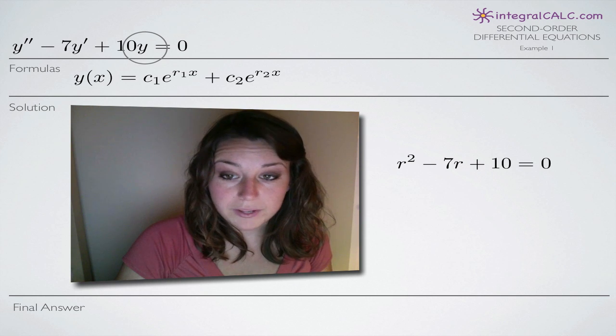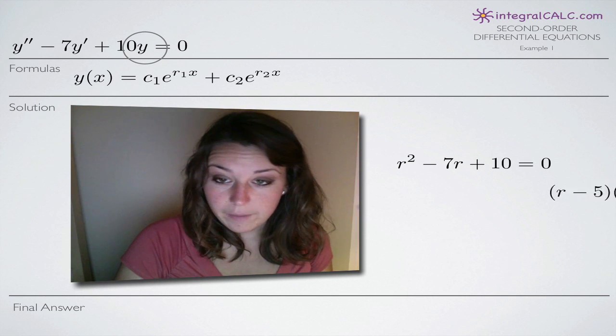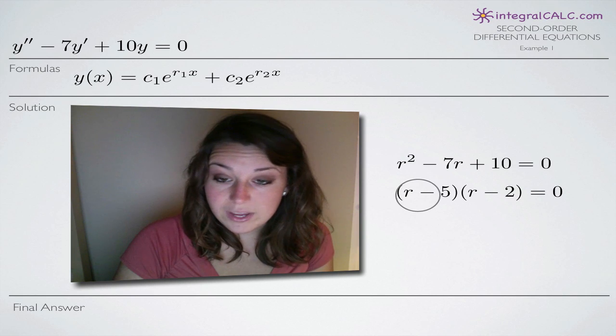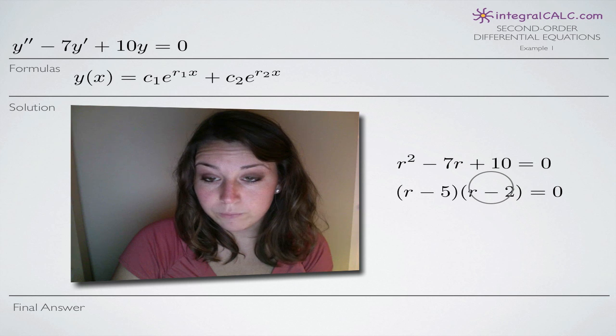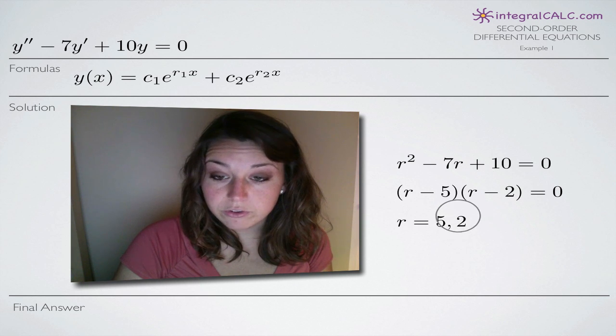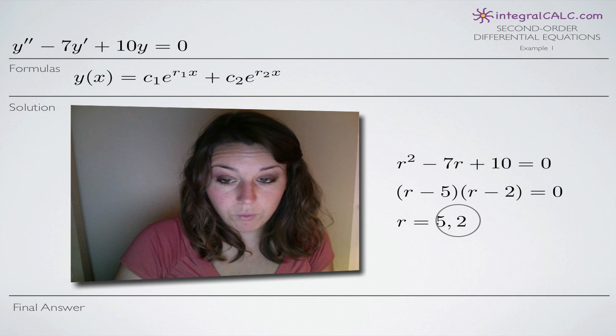So we make each of those replacements and then we factor our function. In this case, the factoring is really easy. We end up with r minus 5 times r minus 2. And when we solve for r, we get 2 solutions. One is 5 and one is 2.